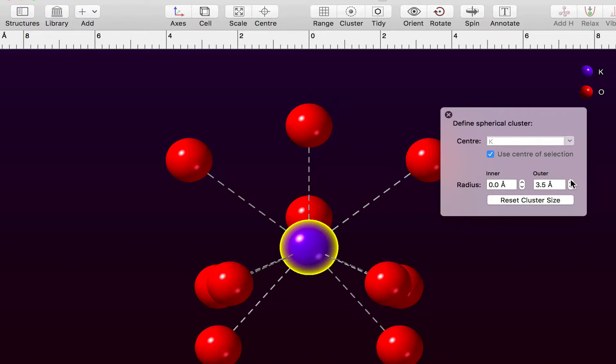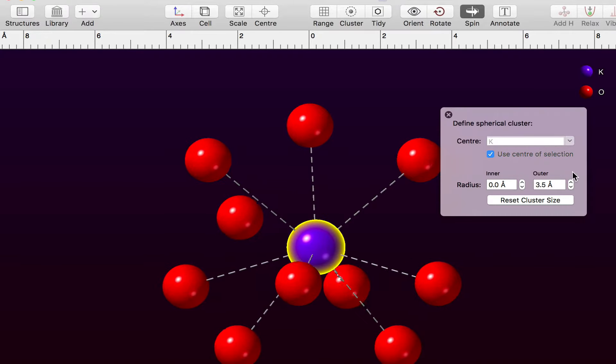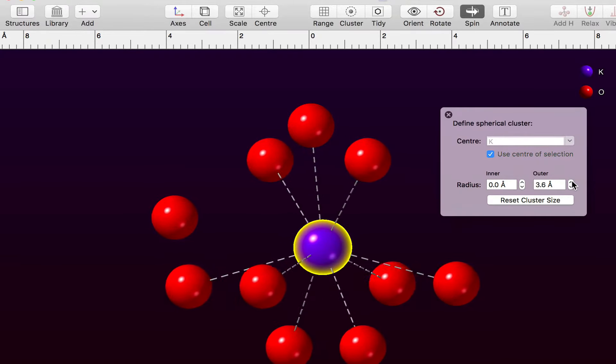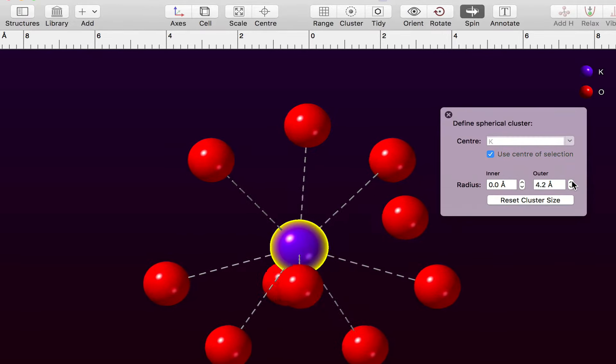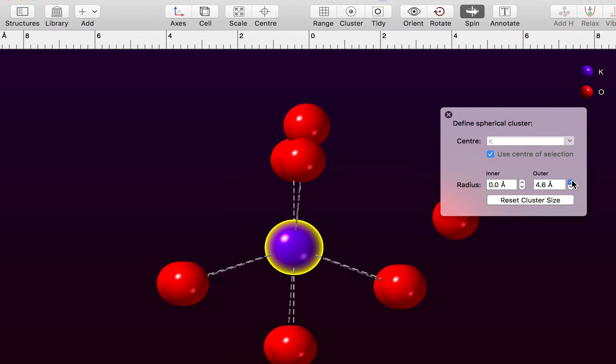So here we have a three and a half angstrom cluster. If we continue to expand the size of our cluster, we'll start to get other non-bonded atoms appearing, including some of the other metal atoms in this structure.